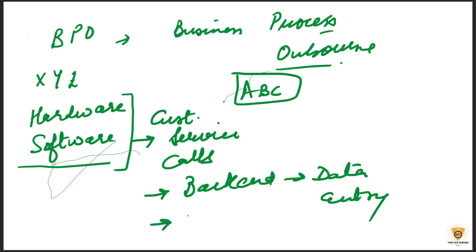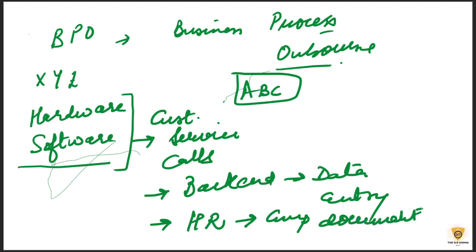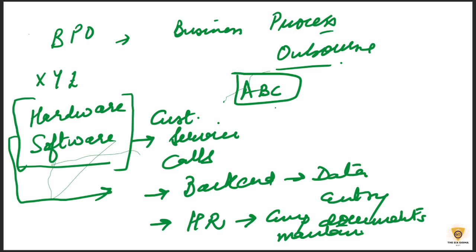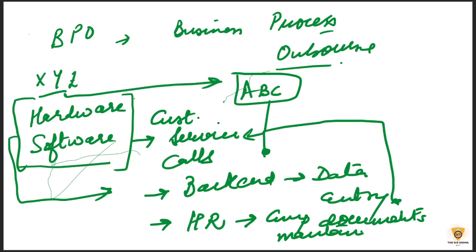And this is a software company — in this case, HR, which is Human Resources, handles employee documents. Now, these hardware and software companies put their resources into these things. They have an ABC company which is only doing customer service, back-end data entry, and employee documents. So XYZ company's work is outsourced to ABC — we call this BPO.